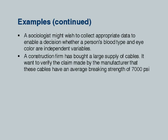You have seen the concept of independent random variables. As an independence test: if you look at data, is there a dependence between a person's blood type and eye color? Some data is collected on these two attributes and the question is whether someone's claim that these two things are independent random variables can be accepted or rejected based on observed data. Another example: a construction firm has bought cables and the manufacturer claims the cables have an average breaking strength of 7000 psi, meaning 7000 psi or more. Do we accept this?